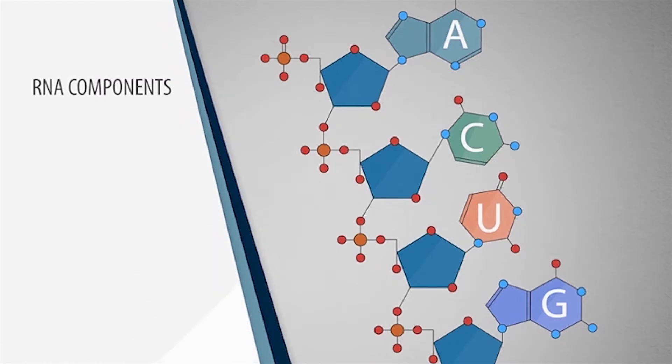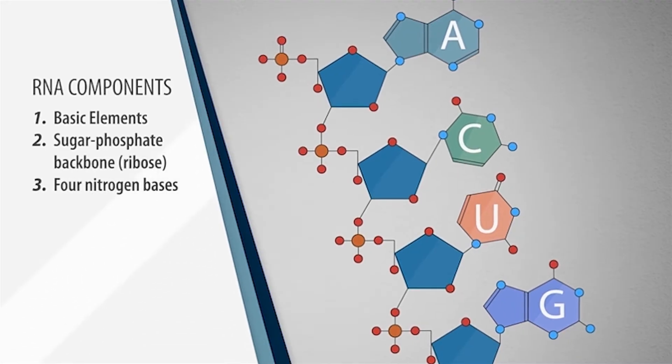Similar to DNA structure, RNA consists of the same basic elements: a sugar phosphate backbone and four nitrogen bases.